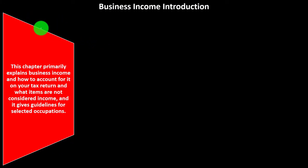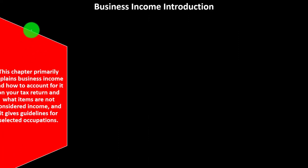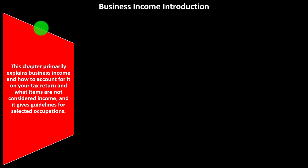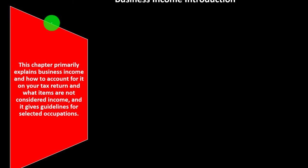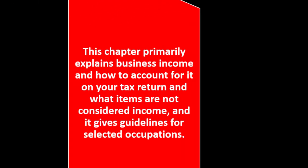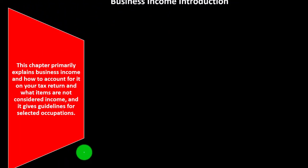Now looking at business income — that's going to be the top line of the income statement we would expect to see on Schedule C. This chapter primarily explains business income, how to account for it on your tax return, what items are not considered income, and gives a guideline for selected occupations.